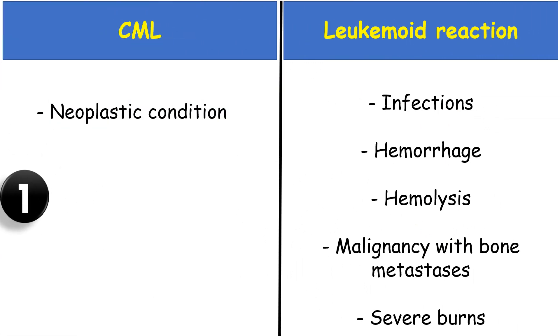Chronic myeloid leukemia is a neoplastic condition, whereas leukemoid reaction can be caused by infection, hemorrhage, hemolysis, malignancy with bone metastasis, and severe burns.